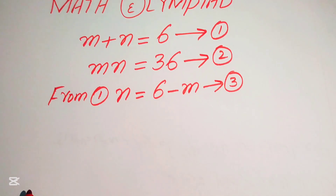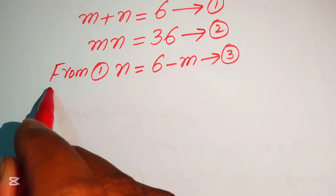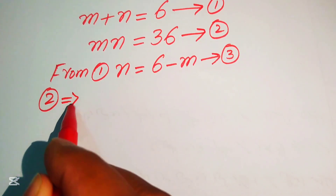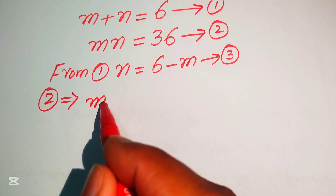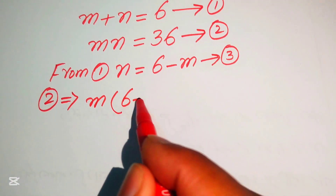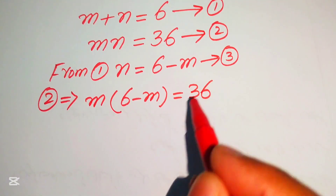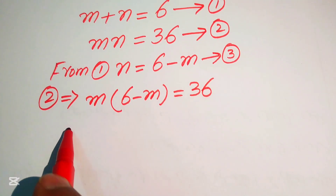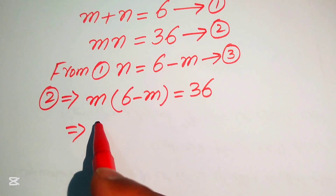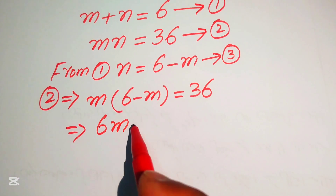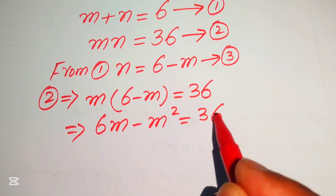We will substitute the value of n into equation number 2, so equation number 2 implies m times n, and we have the value of n is 6 minus m, equals to 36. In the next step we multiply m on both terms, giving us 6m minus m squared equals to 36.